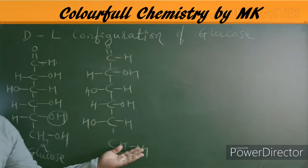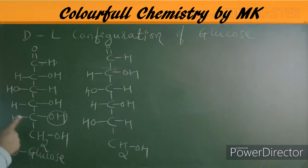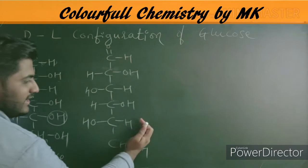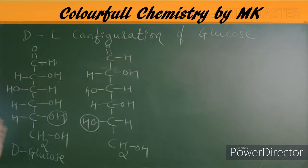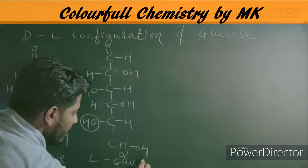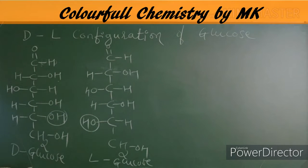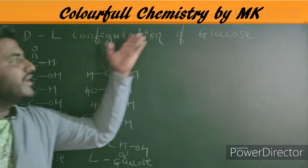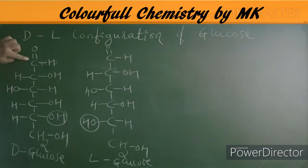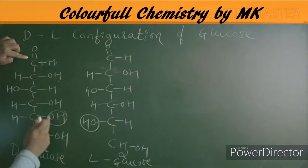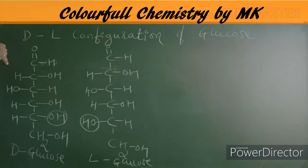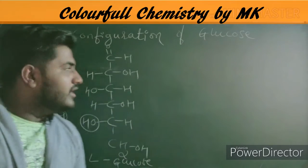Now what is the difference between D-glucose and L-glucose? These two structures are both glucose — all other positions remain the same, but the penultimate carbon has OH on the right side for D-glucose, and OH on the left side for L-glucose.